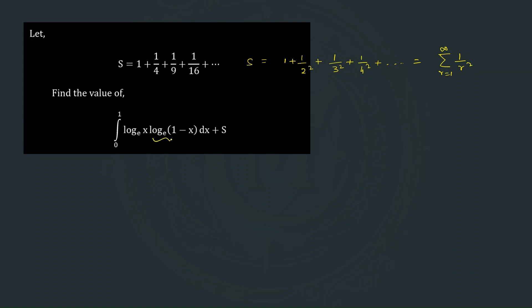Let us first expand one of these logarithmic terms in infinite series form. We know that log(1−x) = −(x + x²/2 + x³/3 + ...) up to infinity, which can be written as minus the summation from r=1 to infinity of x^r divided by r.